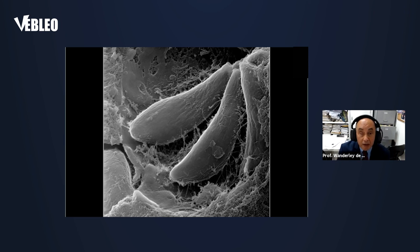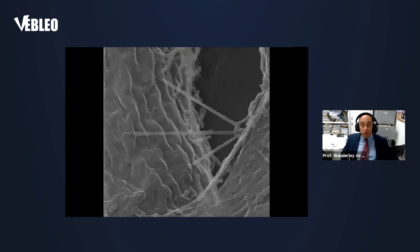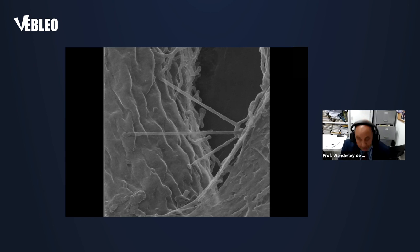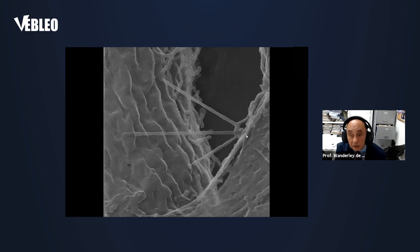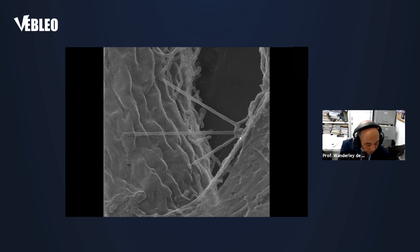If this sample is coated with platinum, the nanotubular network cannot be clearly resolved. Using helium ion microscopy however, they can be clearly visualized. Here is the surface of the parasite, the inner membrane surface, and you can see the organization of these nanotubular structures that extend from the surface of the parasite toward the inner surface of the vacuole, forming a very complex network where substructures can be visualized using this high resolution microscope.